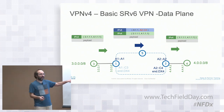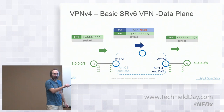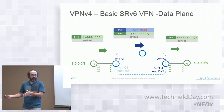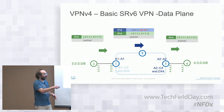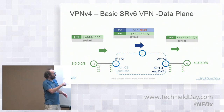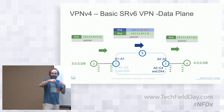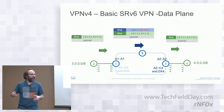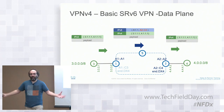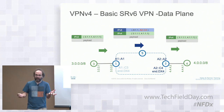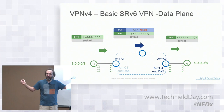With SRV6, there are no host routes needed as in MPLS. Locators can be summarized across IGP domains—just advertise a summary prefix. No need for BGP Labeled Unicast or other complexity. The entire core runs pure IPv6 routing, delivering anything end-to-end.